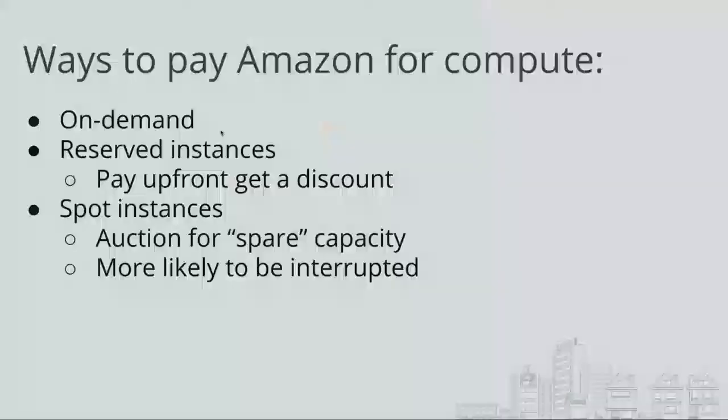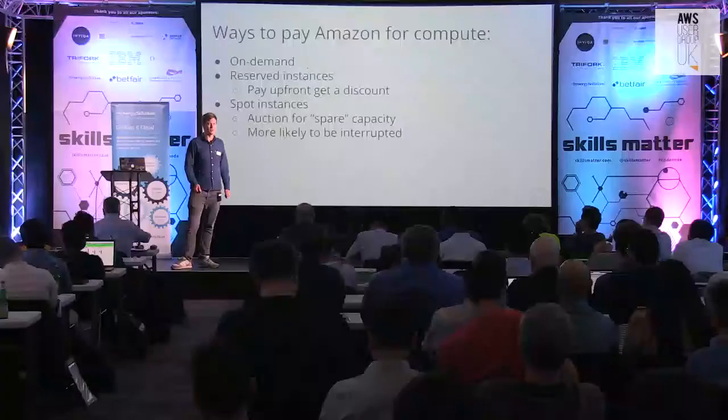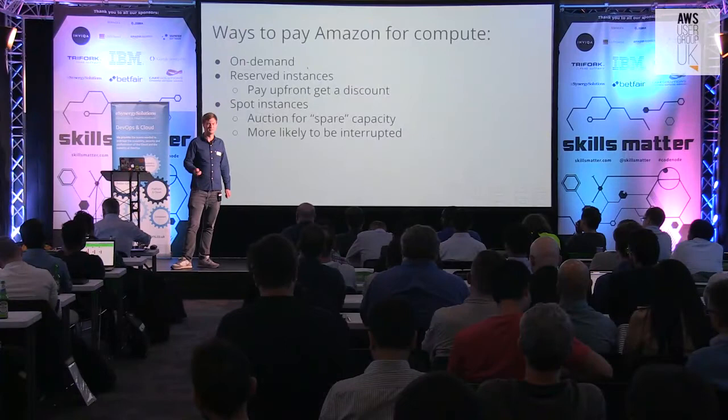I want to start by reminding everyone of the different ways you can pay Amazon for compute. Probably you're all familiar with the on-demand option — it's the simple one. You request a computer from Amazon, you pay by the second, and when you turn it off, you stop paying. All the prices for the different instances are published. It's very straightforward.